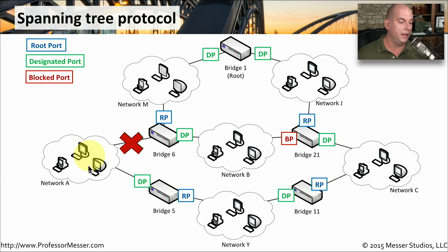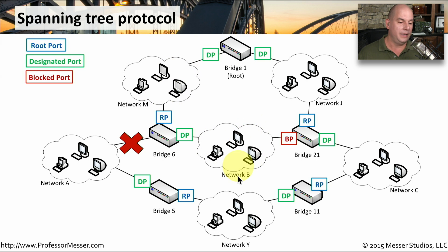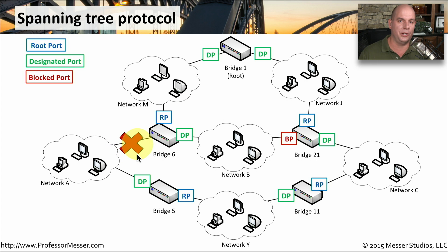Bridge 5 now configures itself so that it can send traffic through. It changes its root port so that this is the path back up to the root. And now if we needed to get from this bridge down to network Y, we're following a completely different path. Notice our blocked port on Bridge 21 is still blocked because you could still get to network B through the old method. It's these changes to get to network Y that have taken place so that now we can go through this entire network and work around the problem that has occurred.